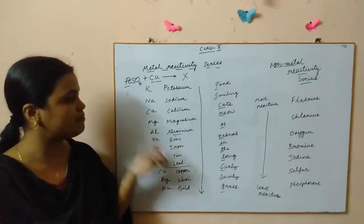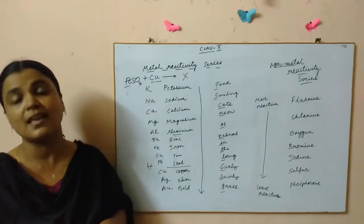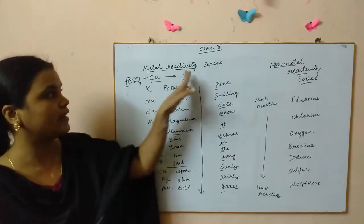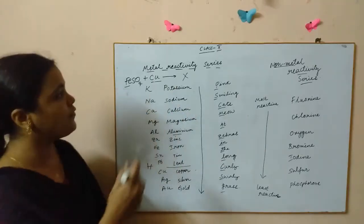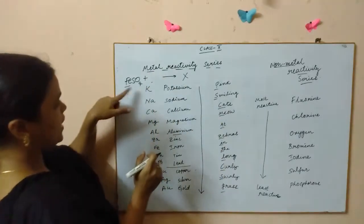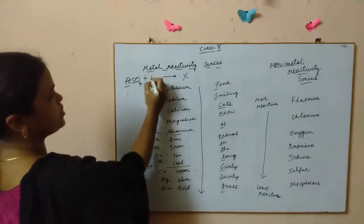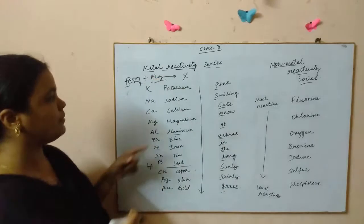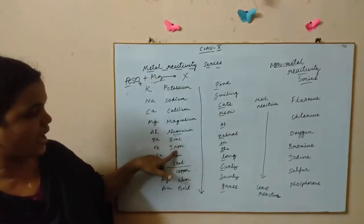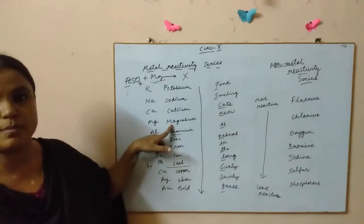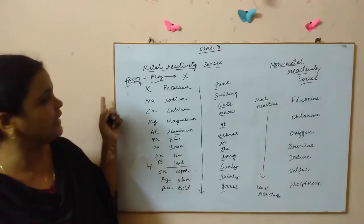In that manner you have to check the positions of these various metals which are present in the metal series and then you have to decide whether the reaction is possible or not. If I say iron sulfate plus magnesium, then can the reaction happen?